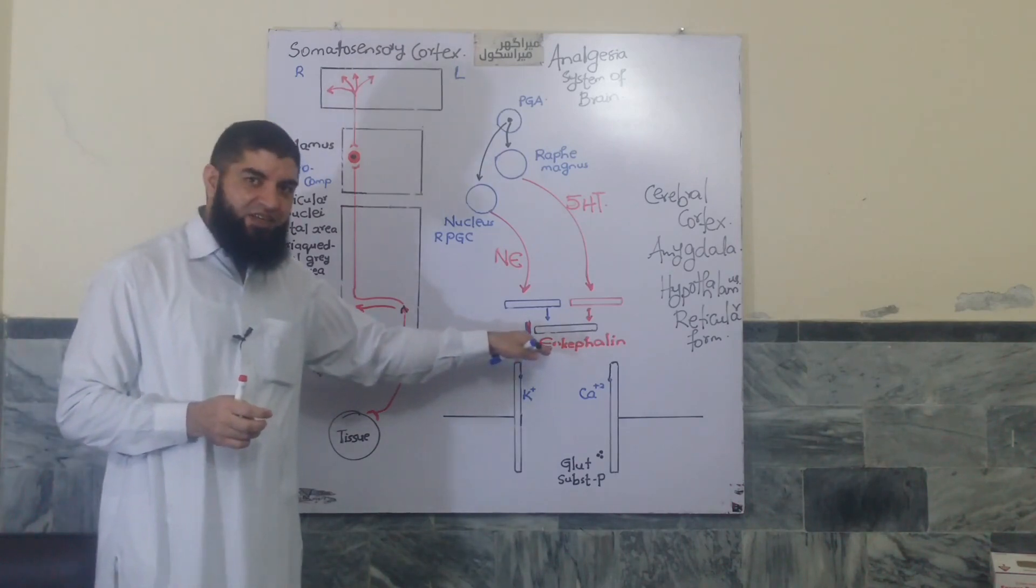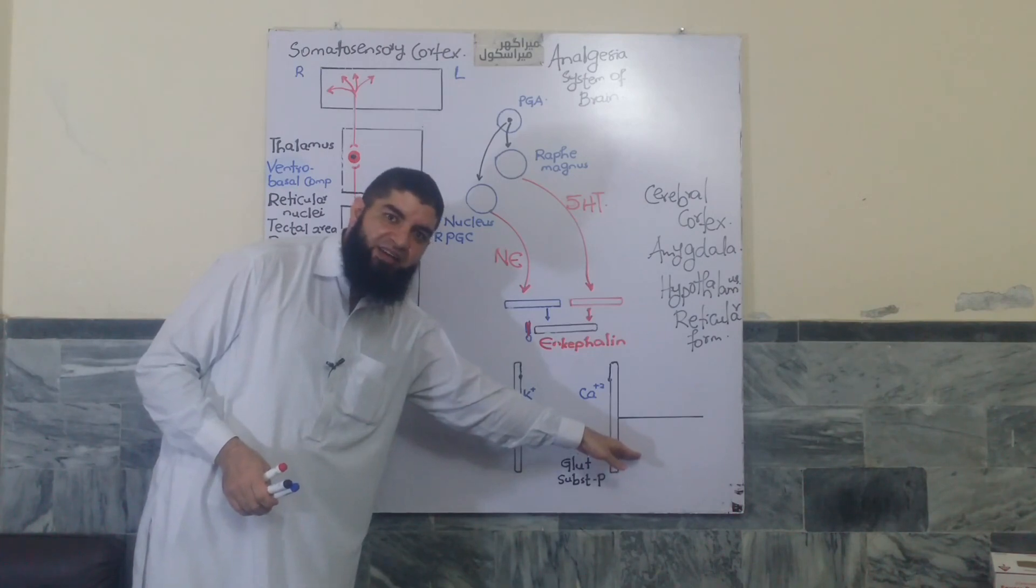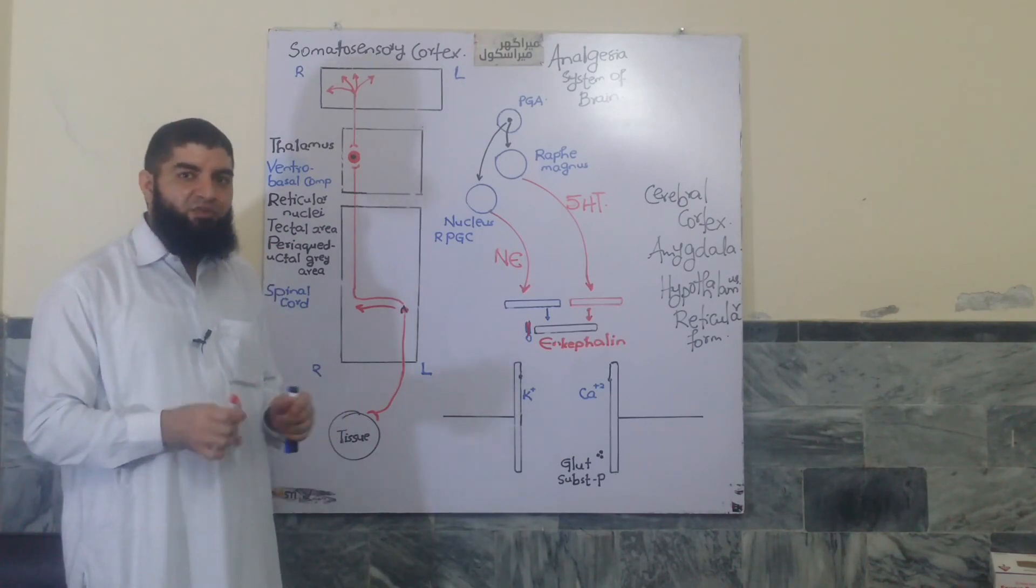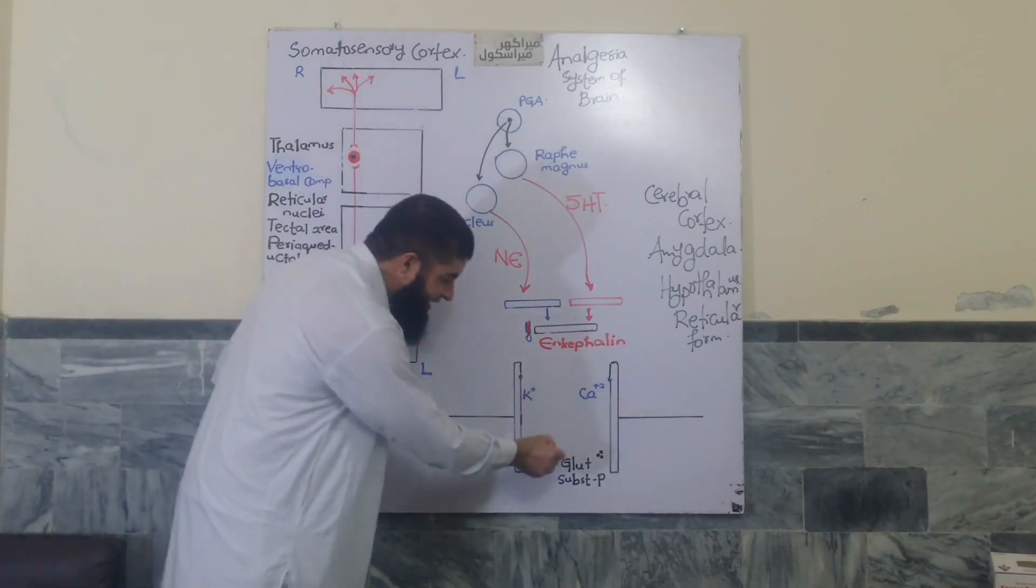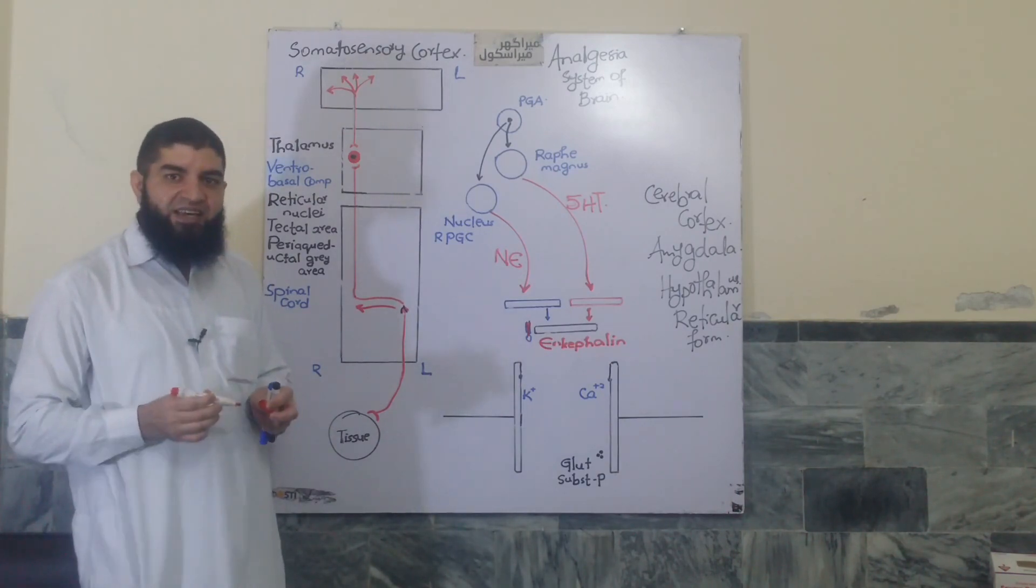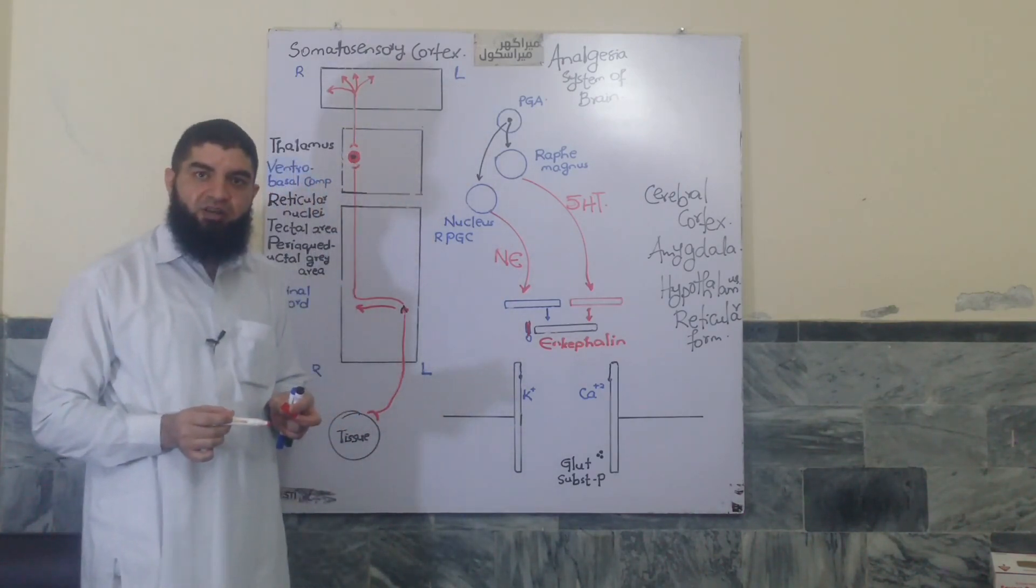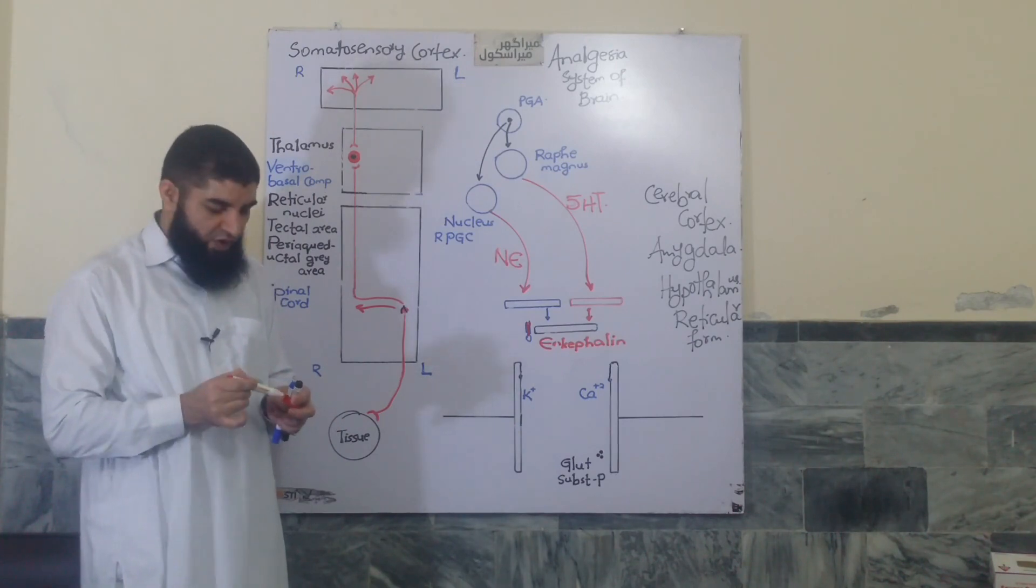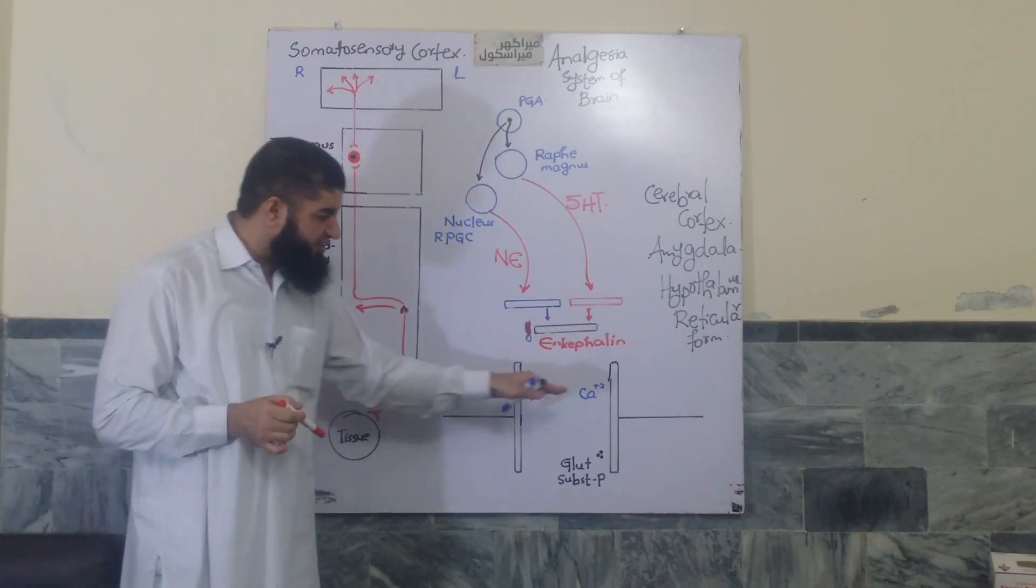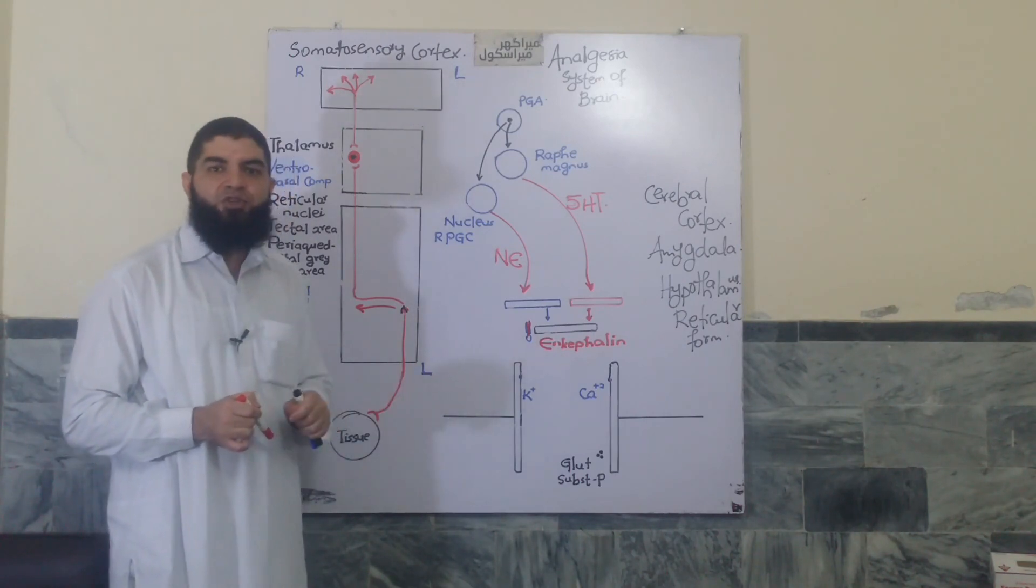We will discuss this in a bit more detail, but what enkephalin does in return. Here, we have a pre-synaptic neuron, a first-order neuron, a presynaptic ending, synapsing on a second-order neuron in the spinal cord. And the stimulation requires the pain signals to cause the release of glutamate and substance P by the pre-synaptic neuron in the synaptic cleft. That causes depolarization of the post-synaptic neuron in the spinal cord. The enkephalin secreted by the interneurons in the spinal cord blocks the pre-synaptic, causes pre-synaptic inhibition and post-synaptic inhibition as well.